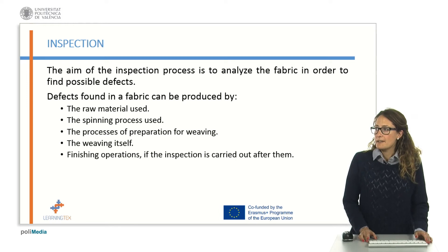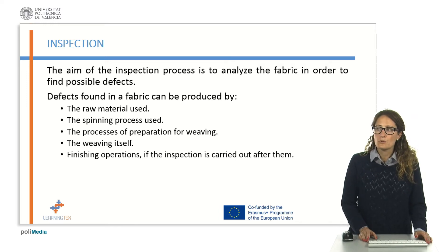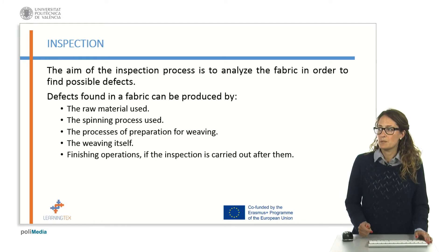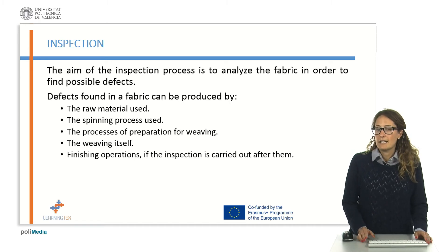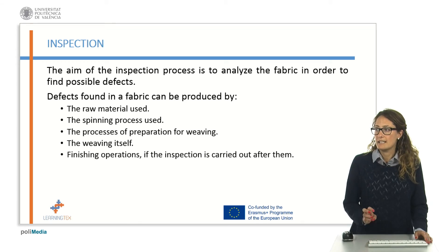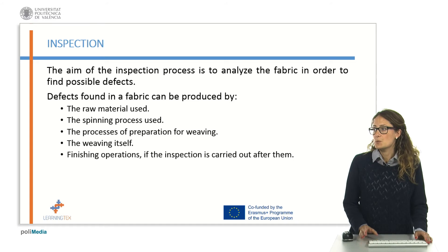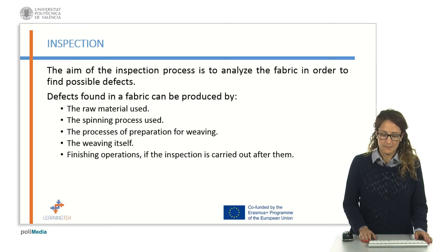The defects found in a fabric can be produced by the raw material used, the spinning process used, the processes of preparation for weaving, the weaving itself, and the finishing operations — but only when the inspection is carried out after them.